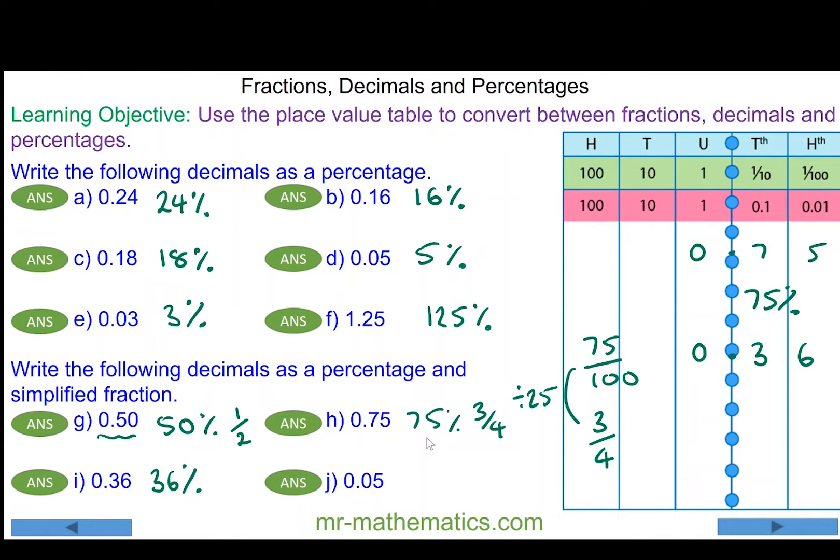And 0.36, which is thirty-six percent. And as a simplified fraction, thirty-six over a hundred divided by four, we have nine over twenty-five.